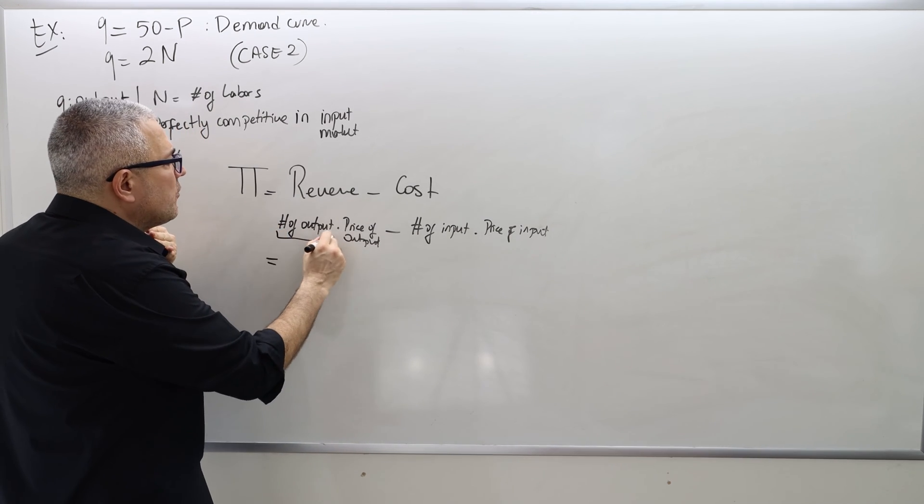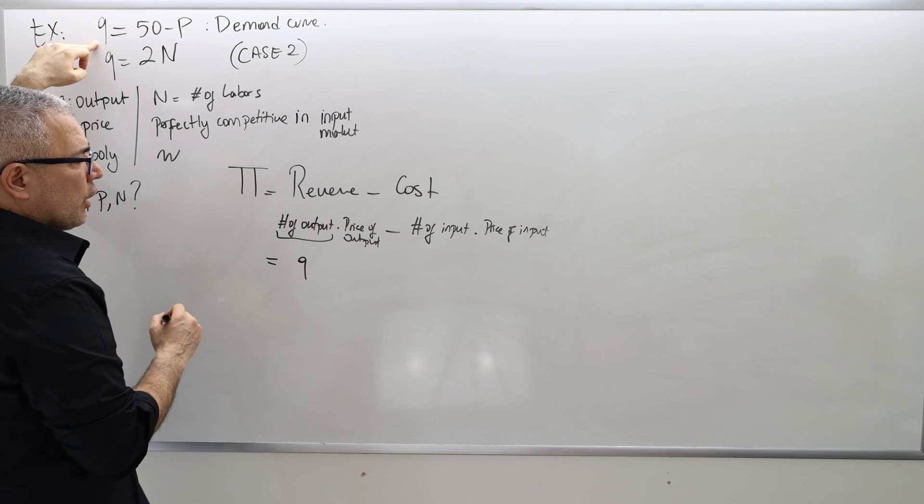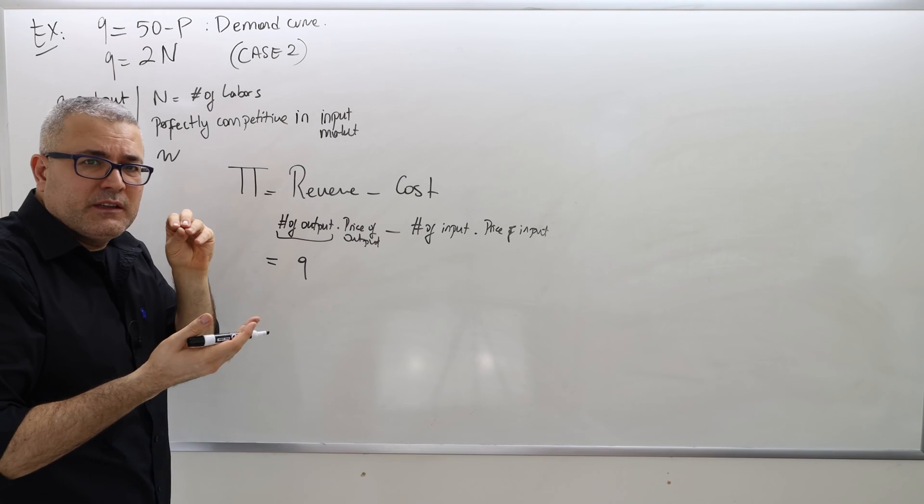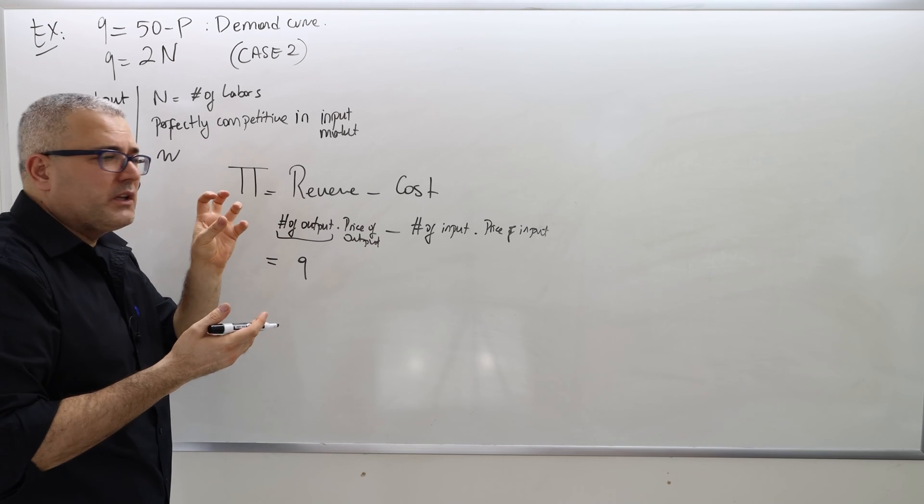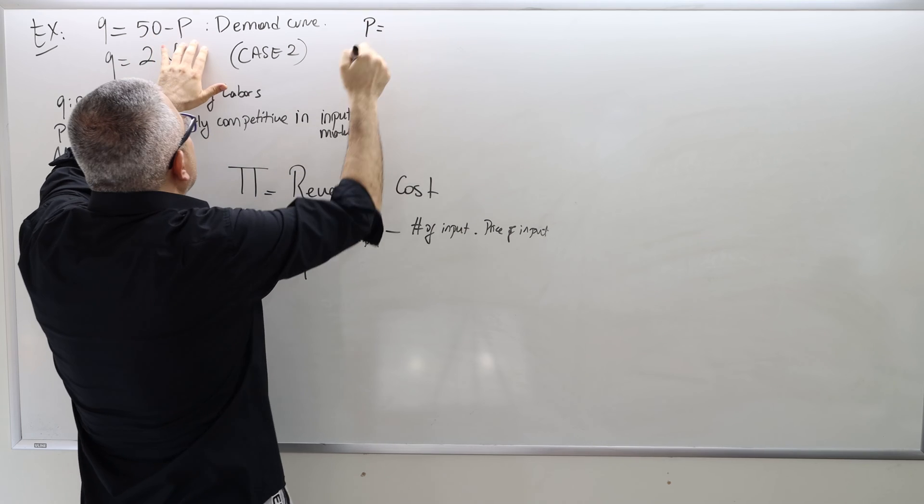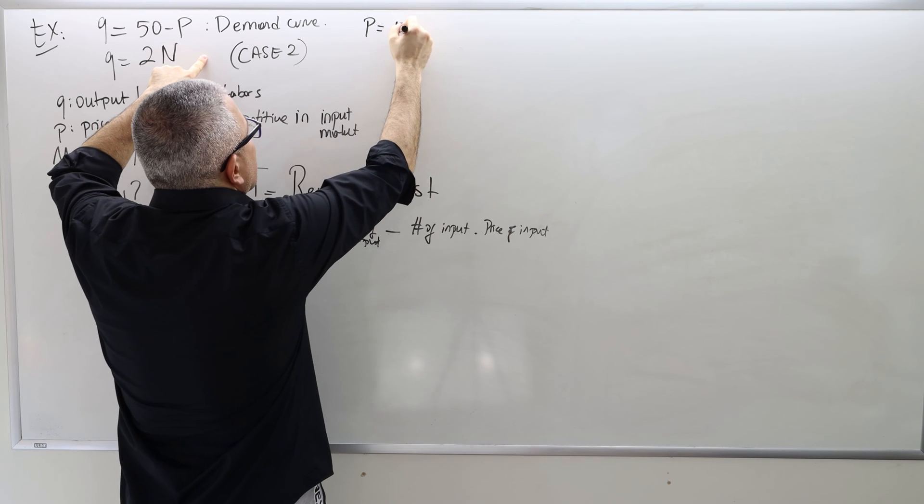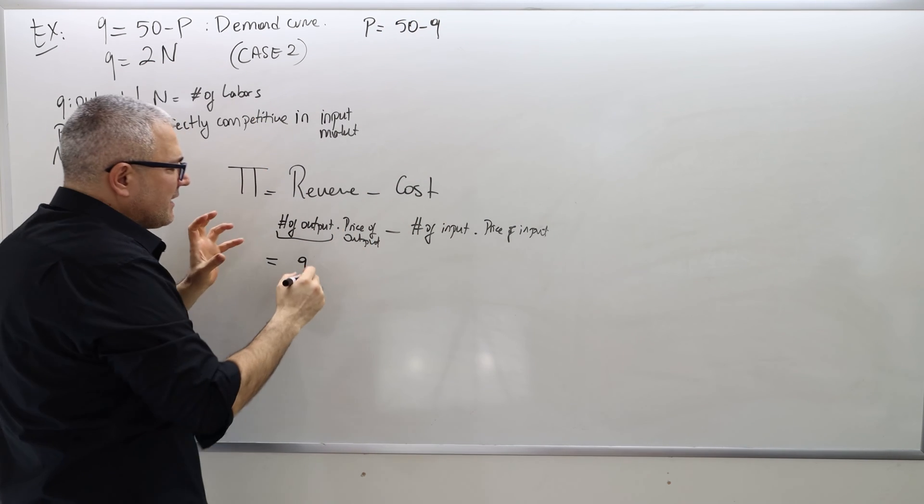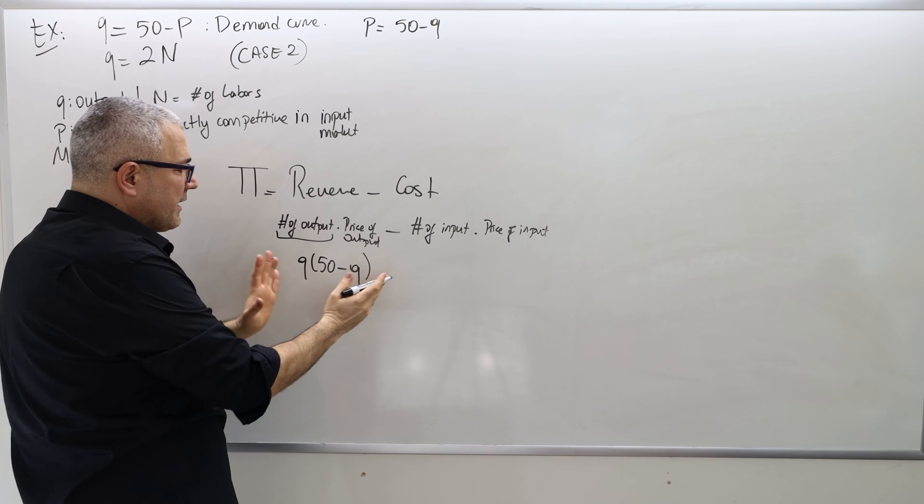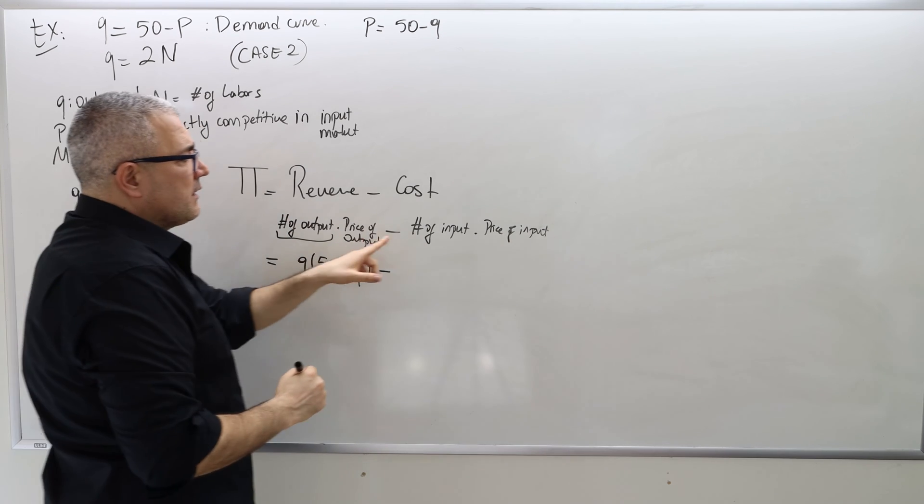So profit function of the firm, always write it as revenue minus cost. Revenue is number of output times price of output. So that's all you need to memorize. What is the number of output? What is the notation we use for this in this particular question? Q. Good. What is the price of output? P.